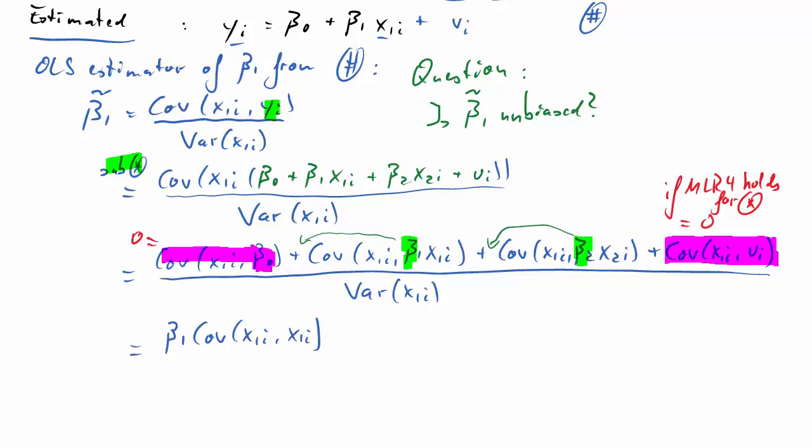So what we are left with is the first term, beta 1 times covariance of x1 and x1. But the covariance of a variable with itself is the same as the variance divided by the variance of x1. That means we can cancel these two out. Everything that survives in the first term is the beta 1. Then plus beta 2 times the covariance of x1 and x2 divided by the variance of x1.